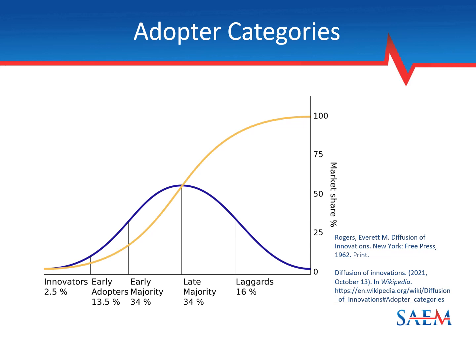I'm going to talk about adopter categories. This comes from the Diffusion of Innovations, a book written in 1962 by Everett Rogers. It highlights that there are different categories of people within a society that will adopt new ideas and technology. On the far left side we have innovators and early adopters — people who will readily adapt to change and try new things.